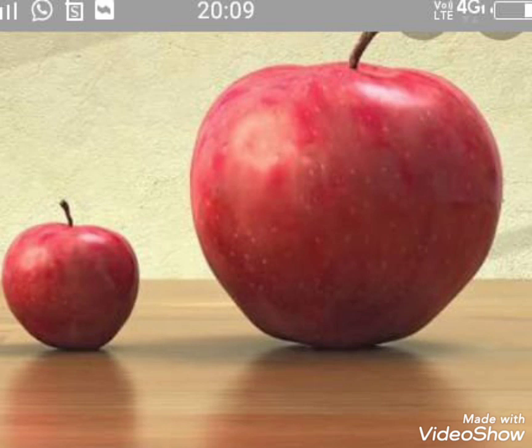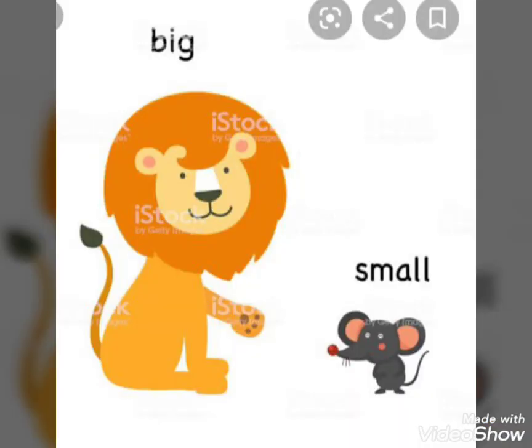These are apples. Can you tell me which is big and which is small? The first apple is big and the second apple is small. See the next — this is a lion and this is a rat. Can you tell me which is big? Lion is big and rat is small. Very good!